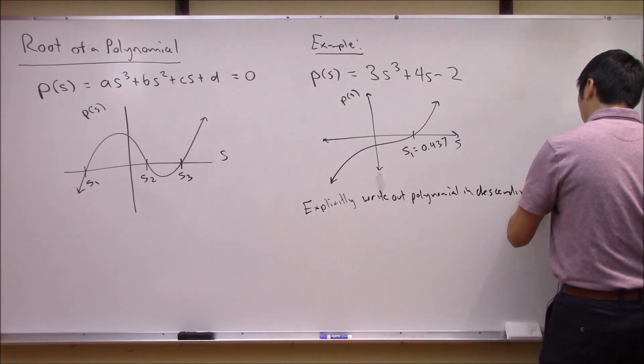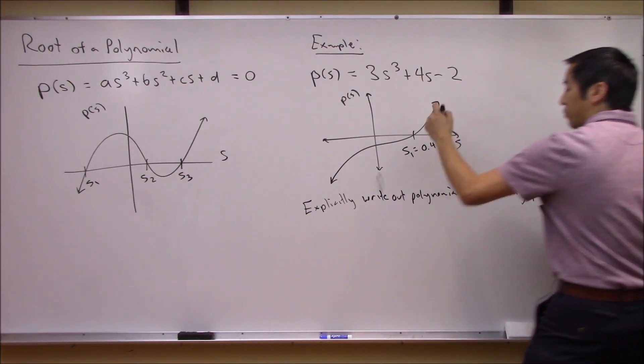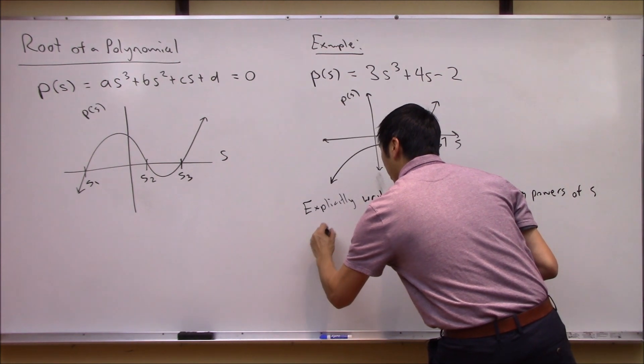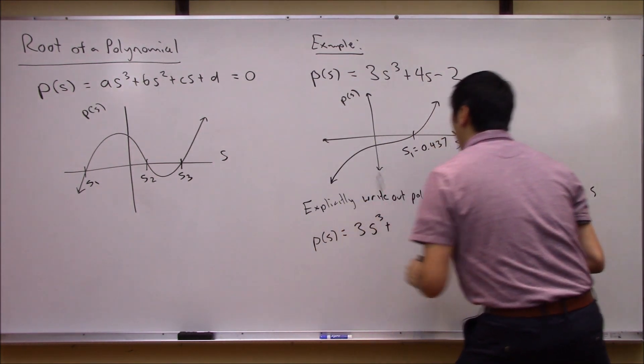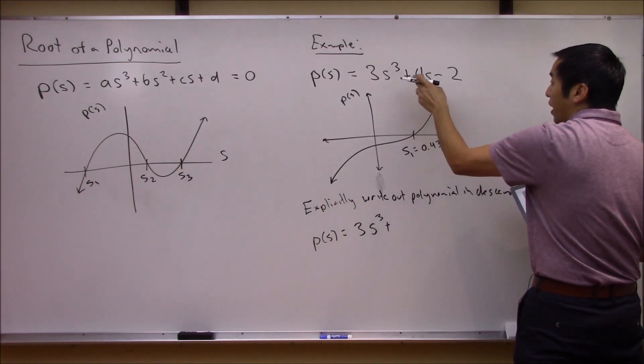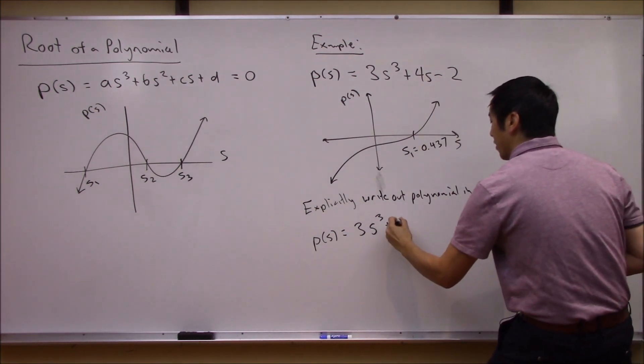In other words, I'm just going to rewrite this P(s) as 3s^3 plus, and you got to be careful here, there's an invisible or implicit zero times s^2. A lot of people will forget that and it will kind of give themselves issues down the road.